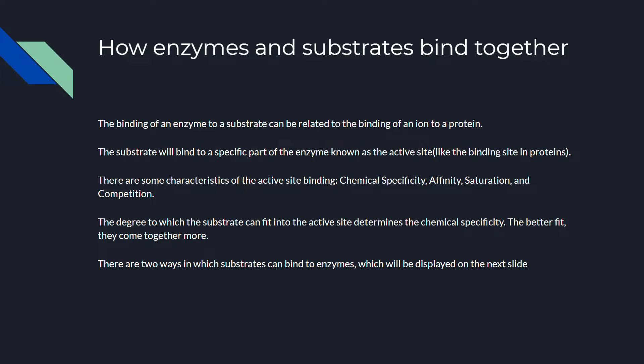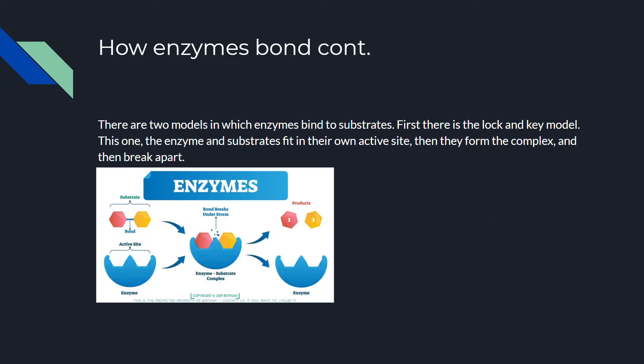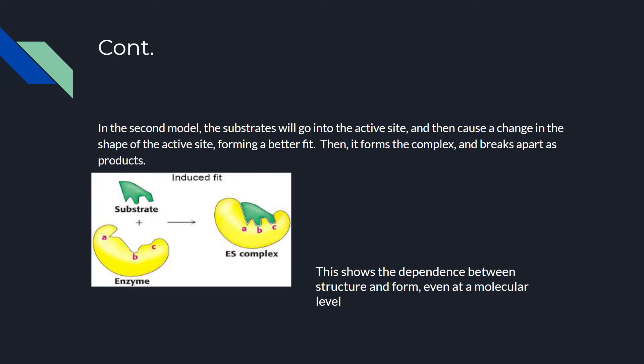The degree to which the substrate fits into the active site determines the type of specificity — the better the fit, the more they come together. There are two ways substrates combine with enzymes. The first is the lock-and-key model: as you can see in the picture, the enzyme and substrate fit directly together in their own active site, then form a complex, and then break apart.